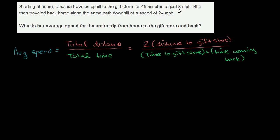How do we know the times are different? She went at different speeds. She went there much slower than she came back, so it took her longer to get there than to get back. Now, at no point do they say the gift store is a specific distance away, but they do tell us she traveled uphill for 45 minutes at 8 miles per hour — so we have a time and a speed, and we can figure out the distance.